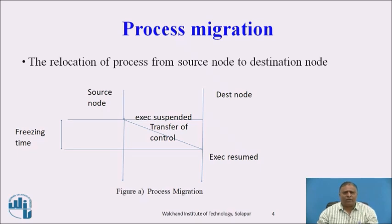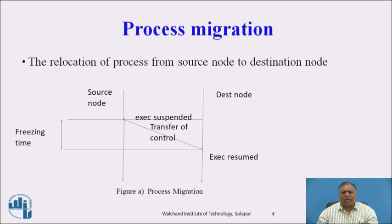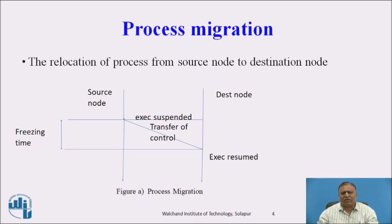Process Migration involves the relocation of a process from a source node to a destination node. At the source node, the node will not have high processing capability, so the job will be transferred to the destination node, which has good or high processing capability. The execution is suspended at the source node, control is transferred to the destination node, and the execution is resumed there.